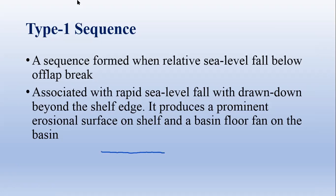Suppose this is a marine environment. If a sea level fall occurs below the shelf break point — this is the sea level and this is the shelf break point — then the sequence forming is termed a type 1 sequence.